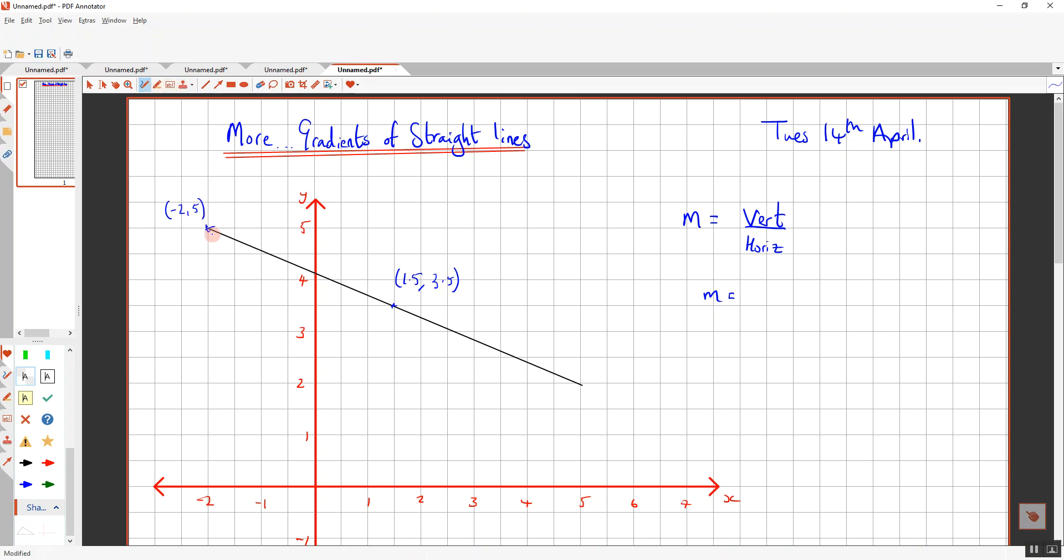So if we have got our diagram, we can draw ourselves a triangle. And we need to work out what the vertical is. So the vertical is... now let's have a look at our units. We're going from 3.5 up to five, through 3.5 up to five. So that's half a unit. That's another half unit, which is one. So that's 1.5.